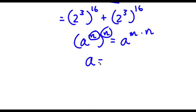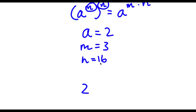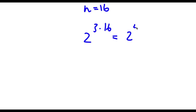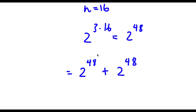So these two exponents simply multiply. In this case, I have 2 to the power of 3 to the power of 16, so we can think of a as 2, m as 3, and n as 16. So this would be equal to 2 to the power of m times n, which is 2 to the power of 3 times 16. And 3 times 16 is equal to 48. So now I have 2 to the power of 48 plus 2 to the power of 48.